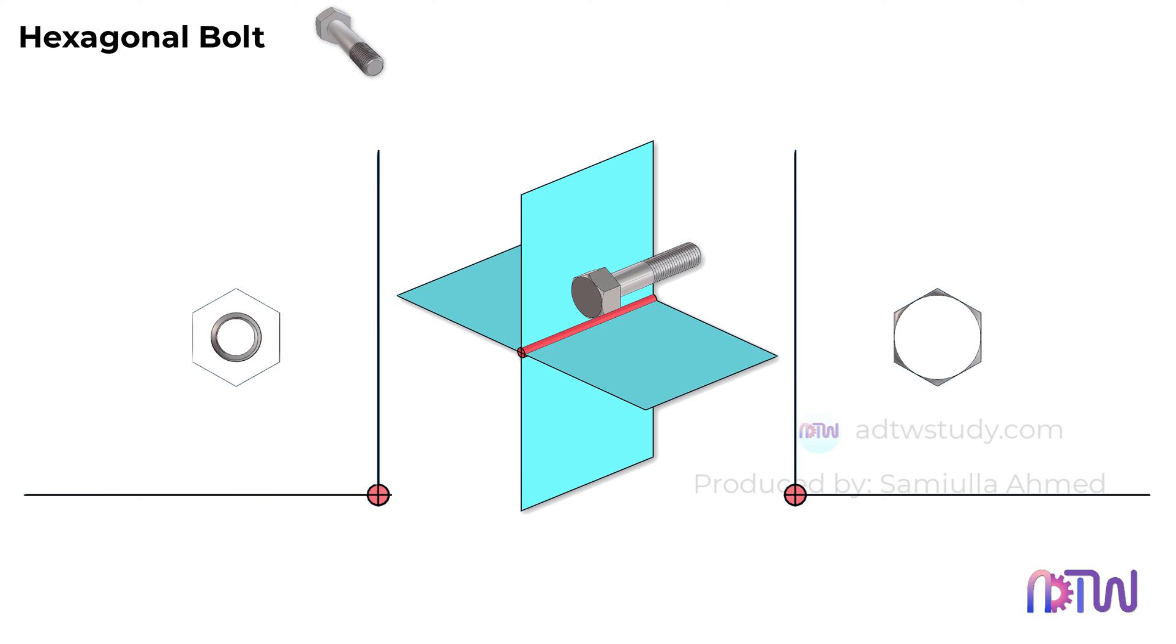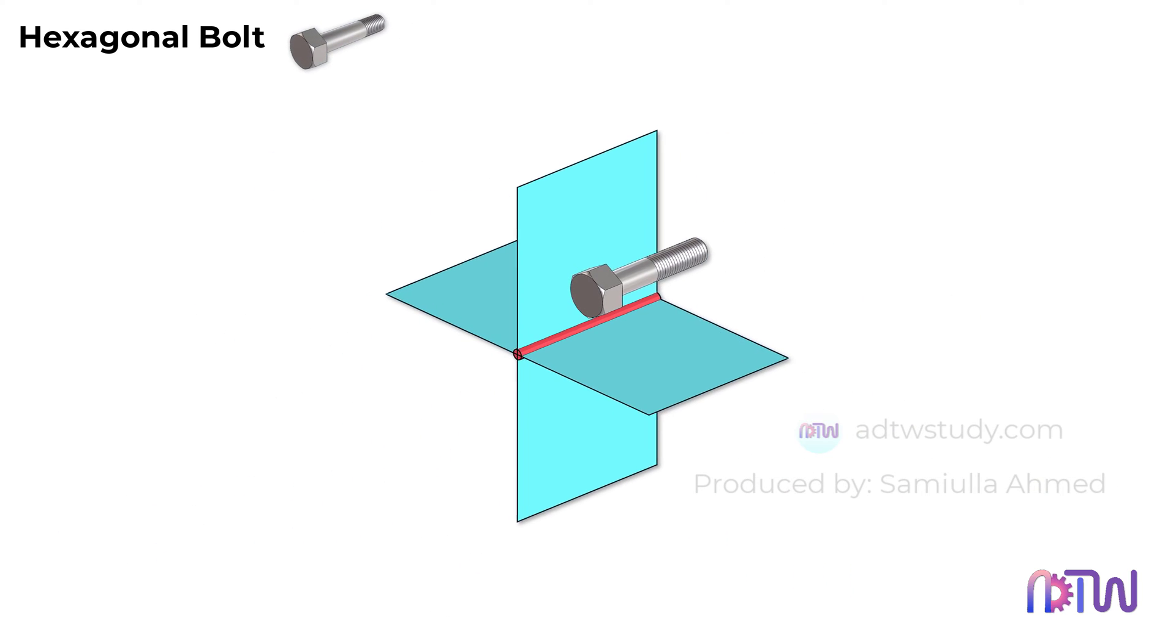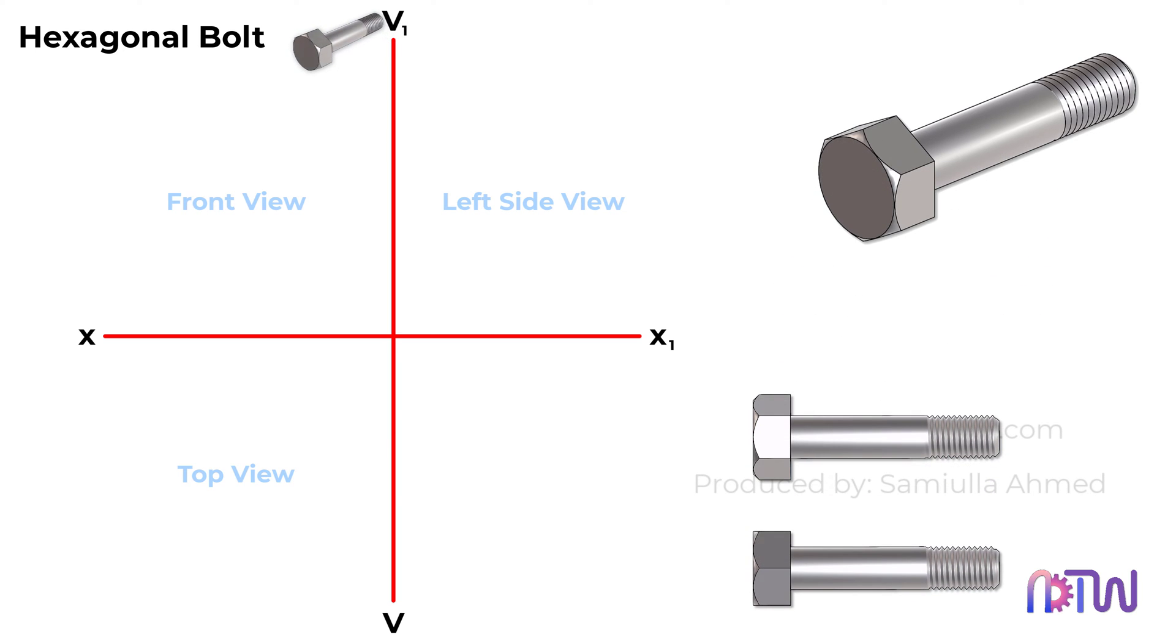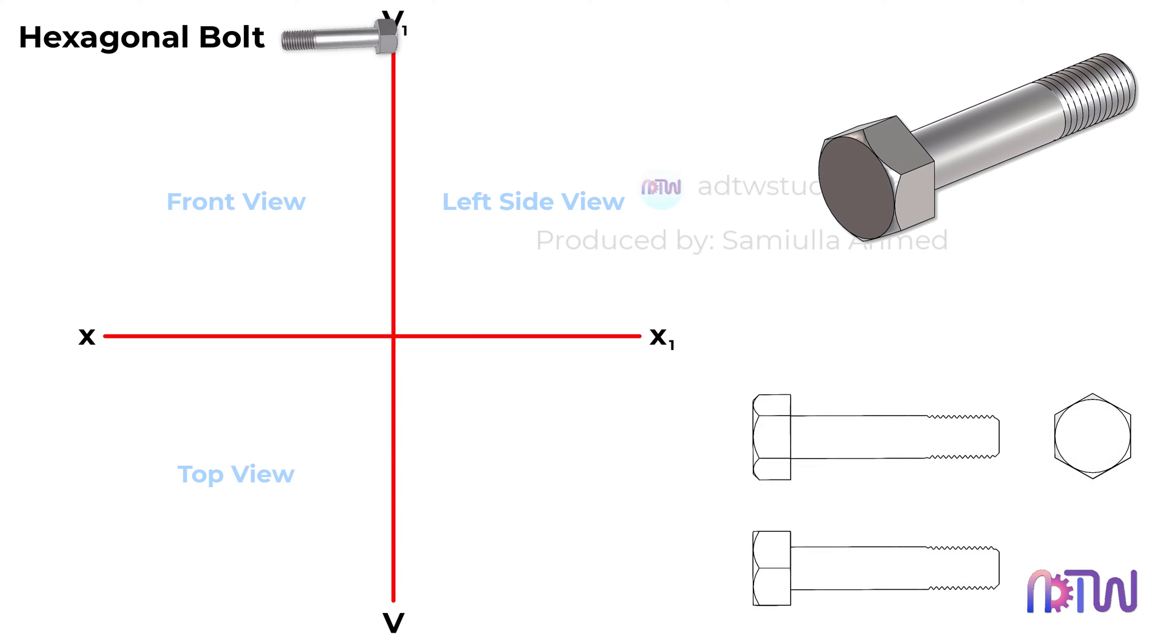Armed with this comprehension, we can proceed with the drawing. Typically, when drawing a bolt, the nominal diameter is provided. For our demonstration, we'll consider a bolt diameter of 20mm as standard.